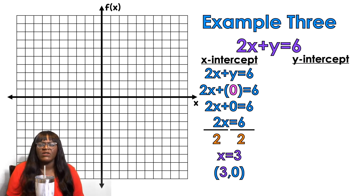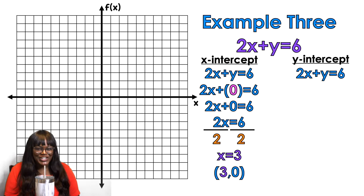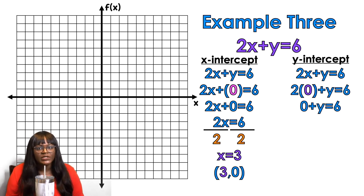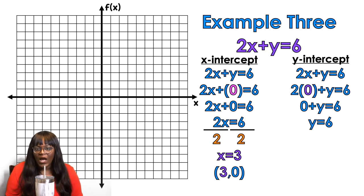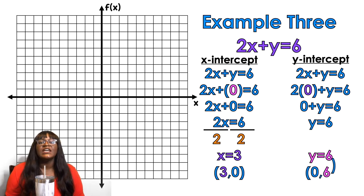Now for the y-intercept of example three: 2x plus y equals 6. I'm going to plug in 0 for x. So 2 times 0 plus y — 2 times 0 is 0, so 0 plus y is just y. Y equals 6. My coordinate is (0, 6).